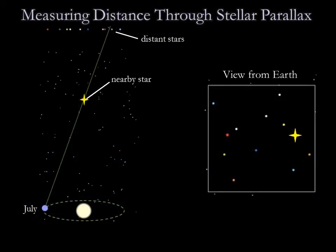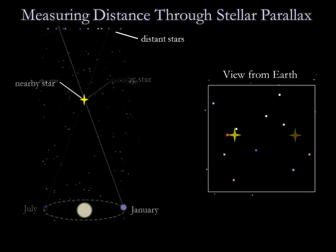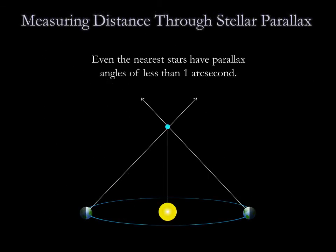Astronomers measure stellar parallax by comparing observations of a nearby star made six months apart. A nearby star will appear to shift against the background of more distant stars because we are observing it from two points of the Earth's orbit. We can calculate a star's distance if we know the precise amount of the star's annual shift due to parallax. This means we measure the angle p, which we call the star's parallax angle. Note that p is equal to half the star's annual back and forth shift.